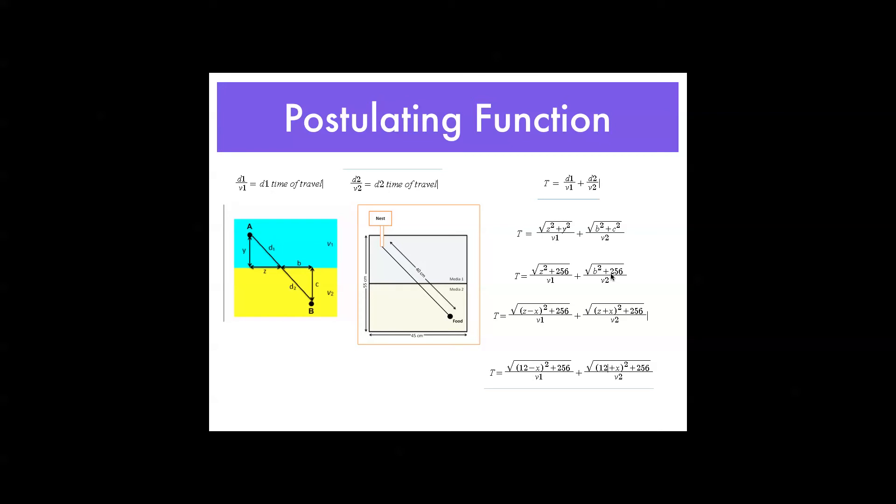Now, the next part. This is where it gets a little tricky. This is where we get our input x from. Now, the path of least time, if assuming that media 1 is slower, your velocity over media 1 is slower than velocity over media 2, then obviously the path is going to go this way. So, it's going to be something like this. So, z is going to decrease, and b is going to increase. Now, take note that whatever factor z decreases by, b increases by. So, that's how we get here. z minus x and z plus x.